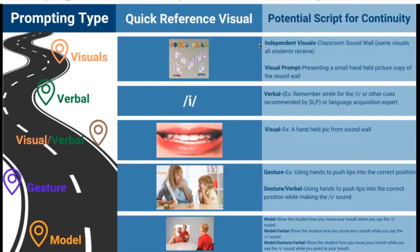The next level is a verbal-only prompt — usually an auditory cue where the adult produces the sound, like 'E,' or might tell the student how to make the sound: 'We smile when we say the E sound,' or 'We open our mouth more when we say that A sound.' Next, we have a visual-only prompt, which might be just holding up that handheld picture from the sound wall to let the student see that.